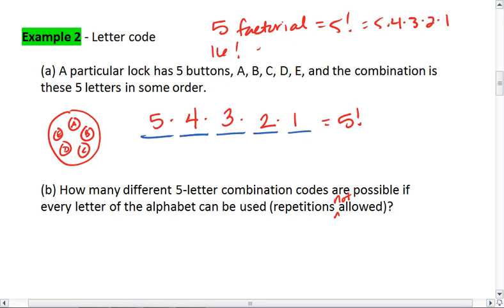16 factorial would be 16 times 15 times 14 times 13 times 12 times 11, and so on, all the way down to one. You can put this into your calculator by writing out 5 times 4 times 3 times 2 times 1.